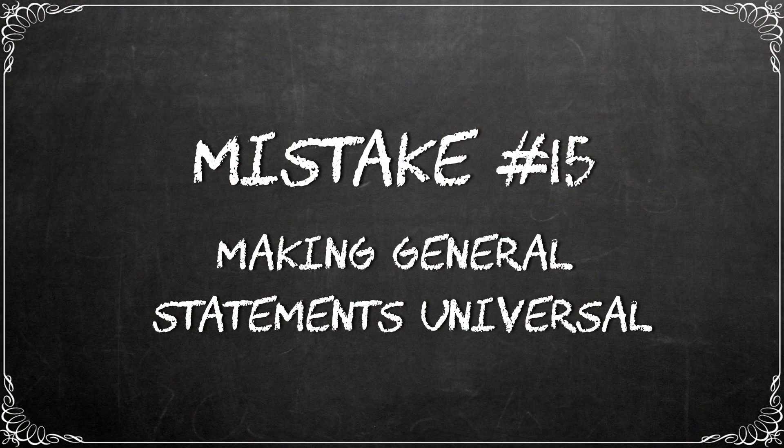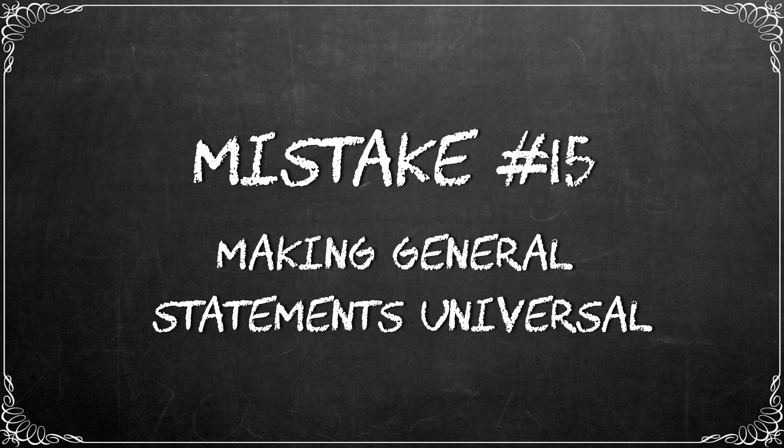Mistake number 15: Making general statements universal. The book of Proverbs is the best place to show this reading mistake. Taken at face value, it looks like a lot of sure bets - if you do A then B will happen. The problem is it doesn't always work like that. Proverbs are wisdom literature, not law. Direct your children onto the right path and when they are older they will not leave it, is what we read in Proverbs 22:6. But this is a generalization, not a rule. When the Bible says that men are stronger than women, it is a generalization, not true at all times among all people.